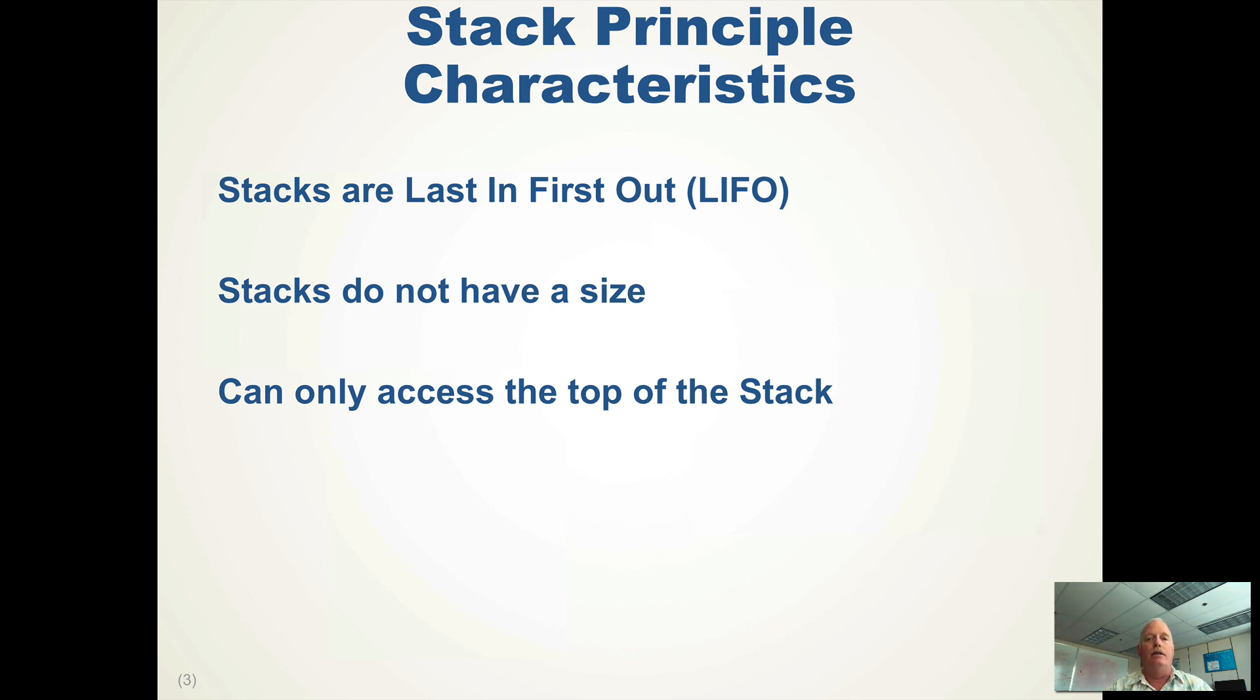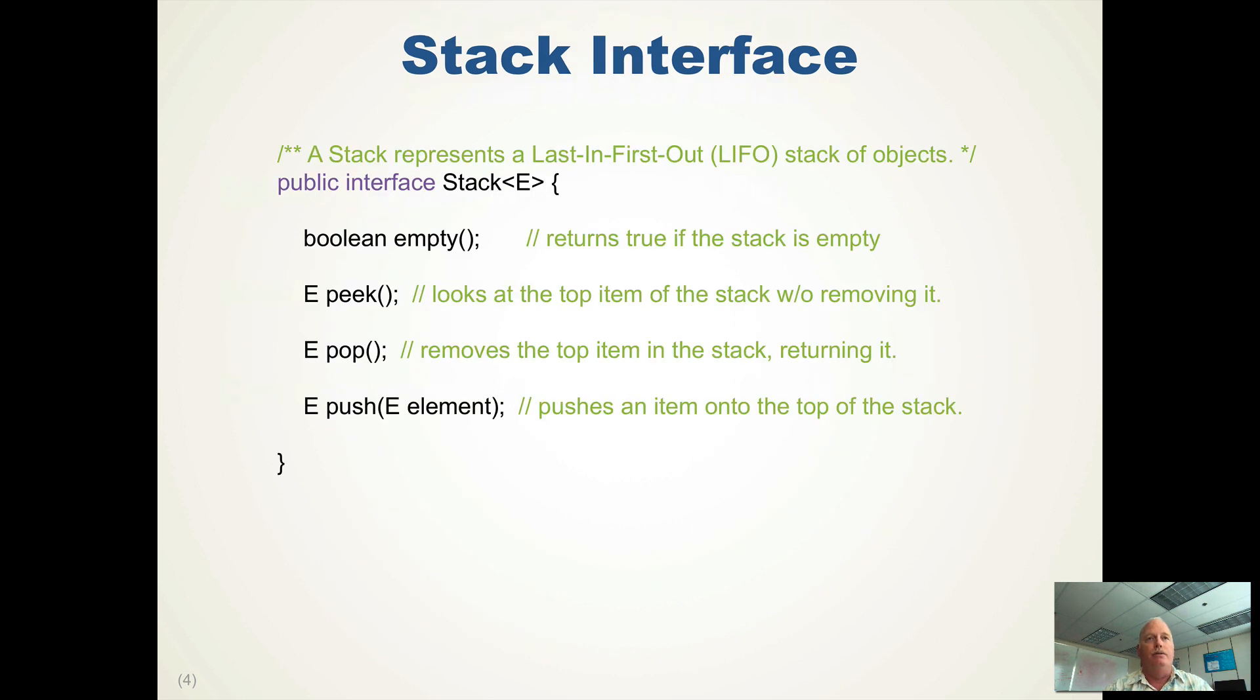That leads us to our stack interface. Very simple interface. It has four methods. Boolean empty allows us to determine whether or not the stack is empty. It will return true if the stack is empty, or false if there's something in the stack. But we don't know how many items, we just know it's empty or not.